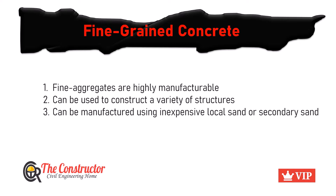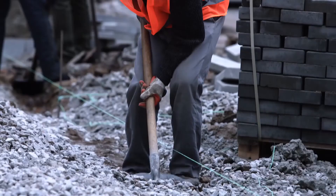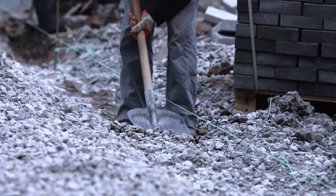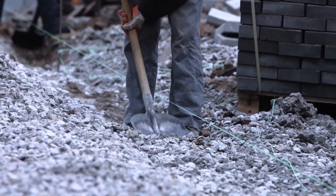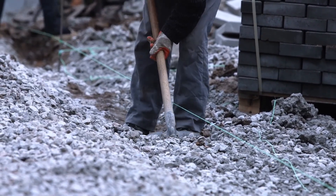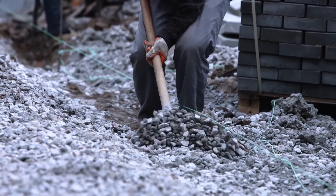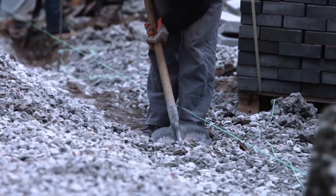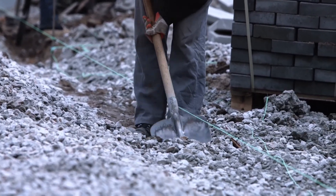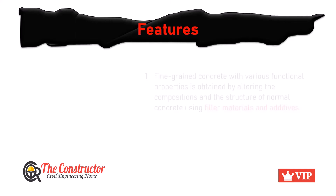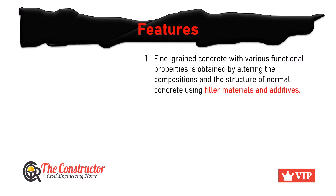Let's discuss some of the important significance of fine grain concrete. Coarse aggregate used for normal concrete mixture is an essential ingredient. In regions where there is scarcity of coarse aggregate, fine grain concrete can be used as a better alternative, where fine aggregate is used as the potential substitute for coarse aggregate.